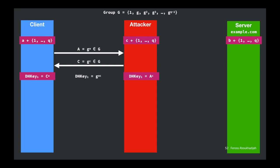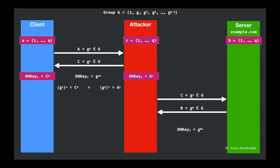At this point the attacker also negotiates a connection to the real server — the server thinks this is just a client making a request. The attacker sends G-to-the-C to the server, the server sends G-to-the-B back, and they negotiate DH key two, which is G-to-the-BC. Now any request from the client gets forwarded along this connection and the response comes back — neither side knows they're being man-in-the-middled. This is called a man-in-the-middle attack.